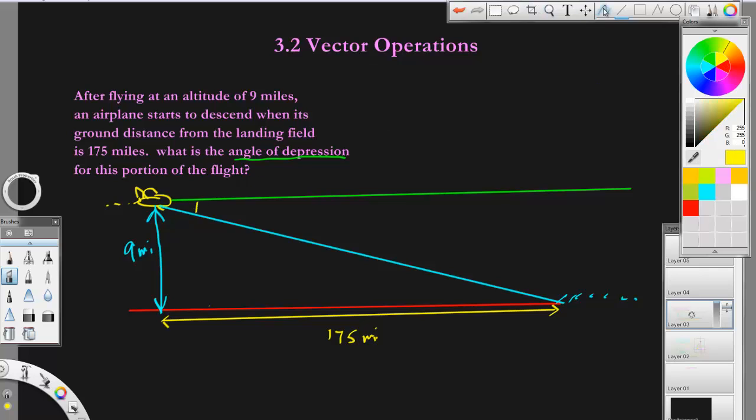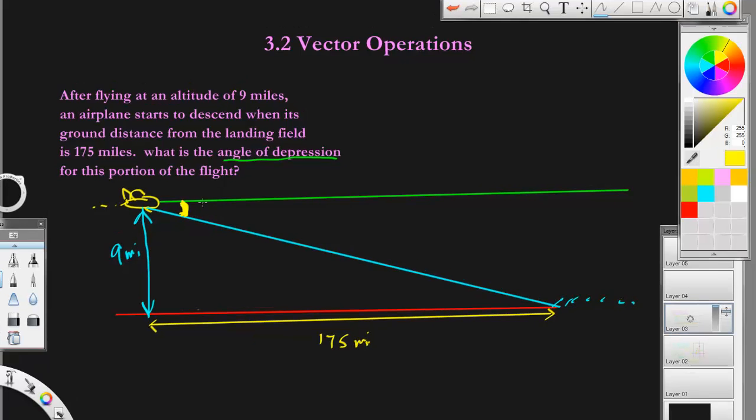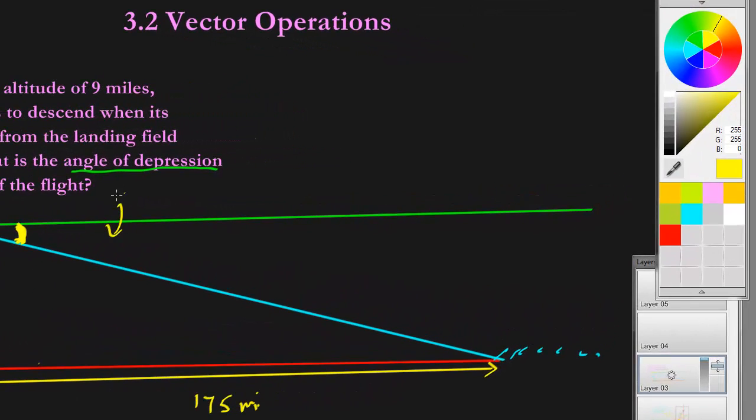The angle of depression is this angle right here. It's this angle right here. It's the angle from the horizontal down. So it's kind of like aiming out level and then angle of depression is how far down it goes. This is called the angle of depression.